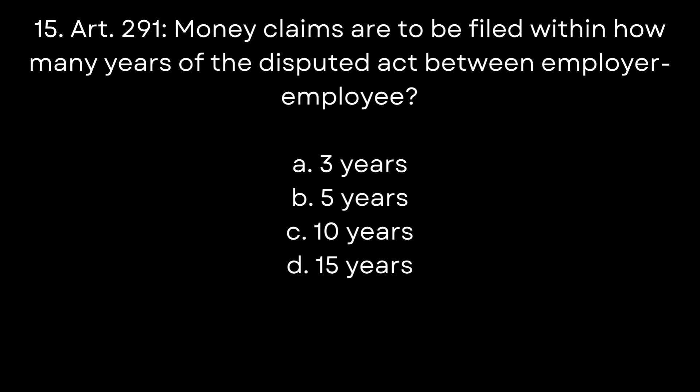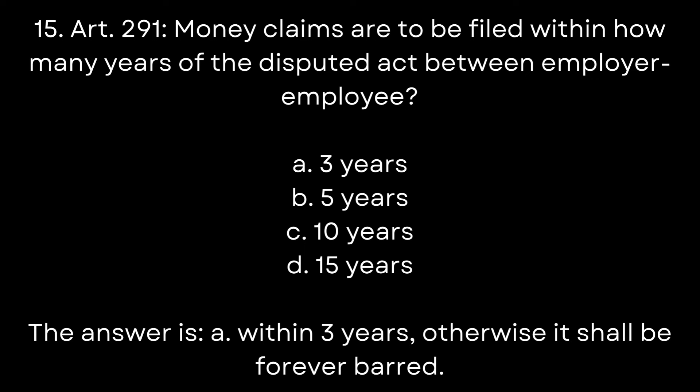Question 15. Article 291. Money claims are to be filed within how many years of the disputed act between employer and employee? A. Three years. B. Five years. C. Ten years. D. Fifteen years. The answer is within three years, otherwise it shall be forever barred.